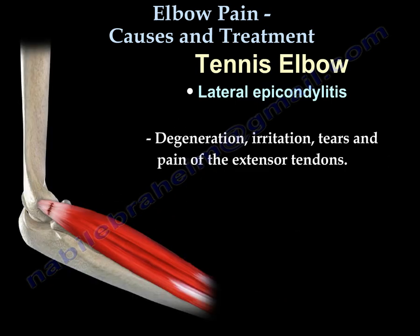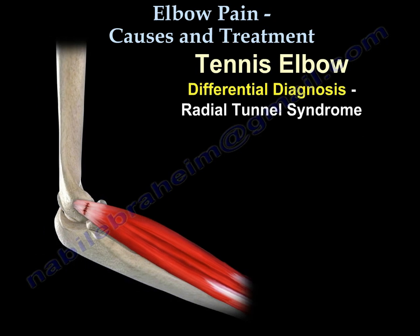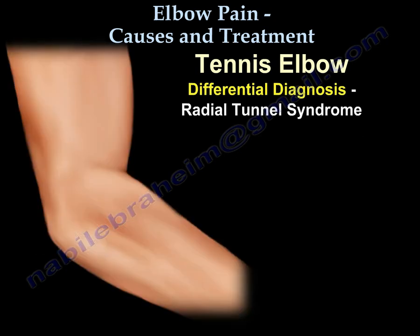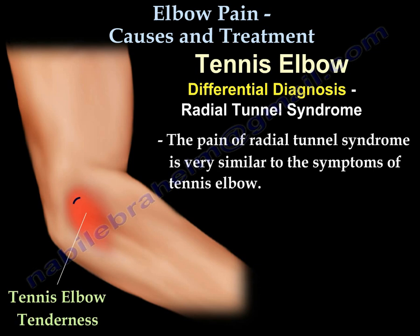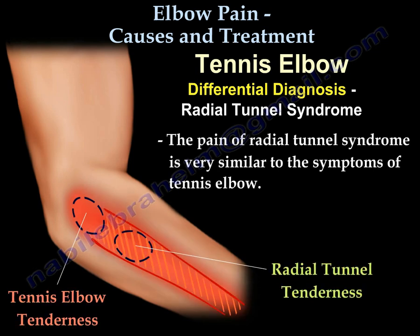Tennis elbow occurs from degeneration, irritation, tears, and pain of the extensor tendons. For differential diagnosis, radial tunnel syndrome has pain very similar in location to tennis elbow — it is also on the outer side of the elbow.